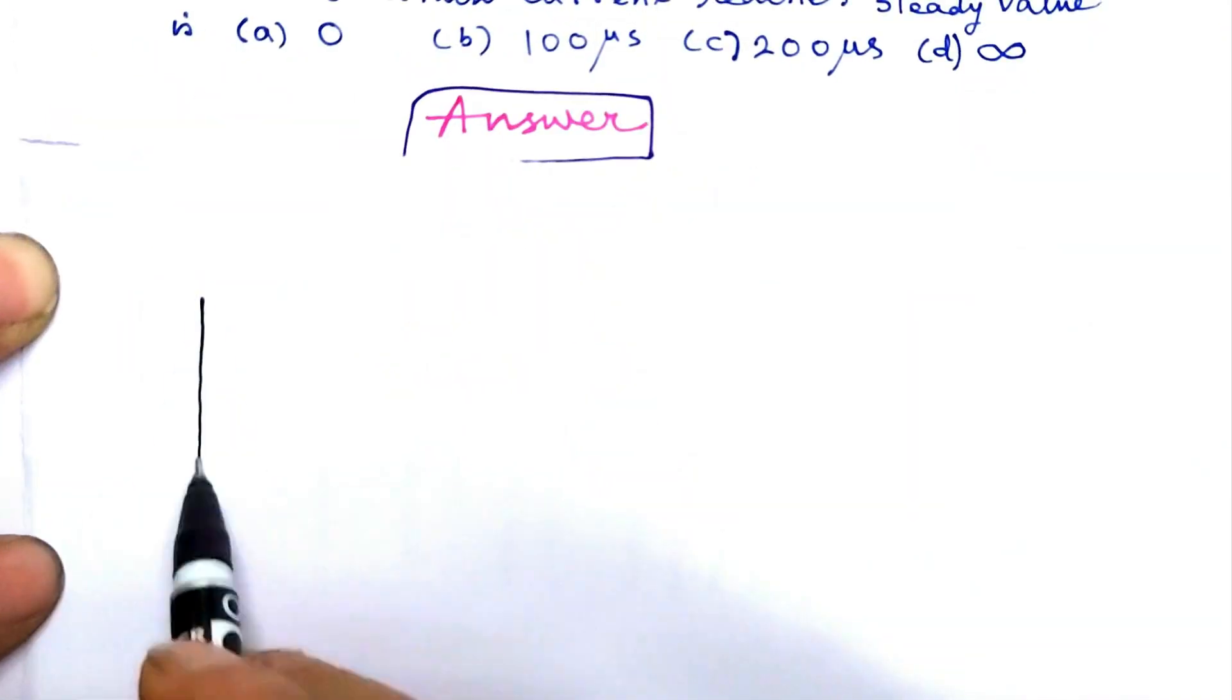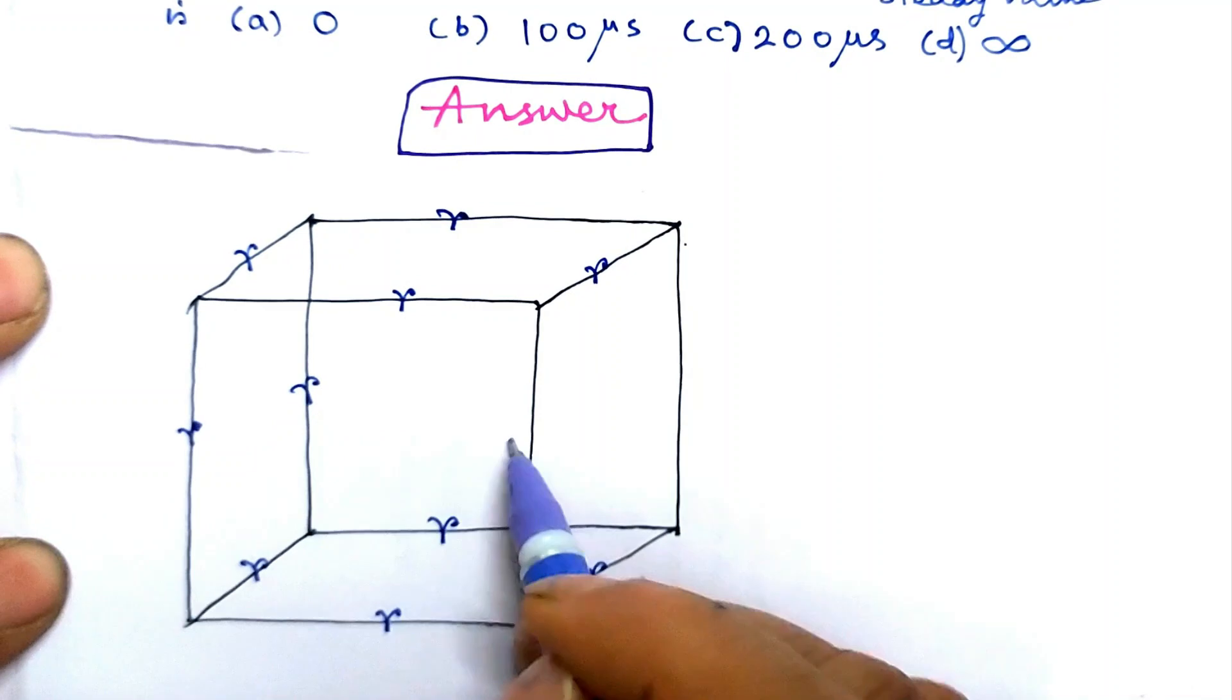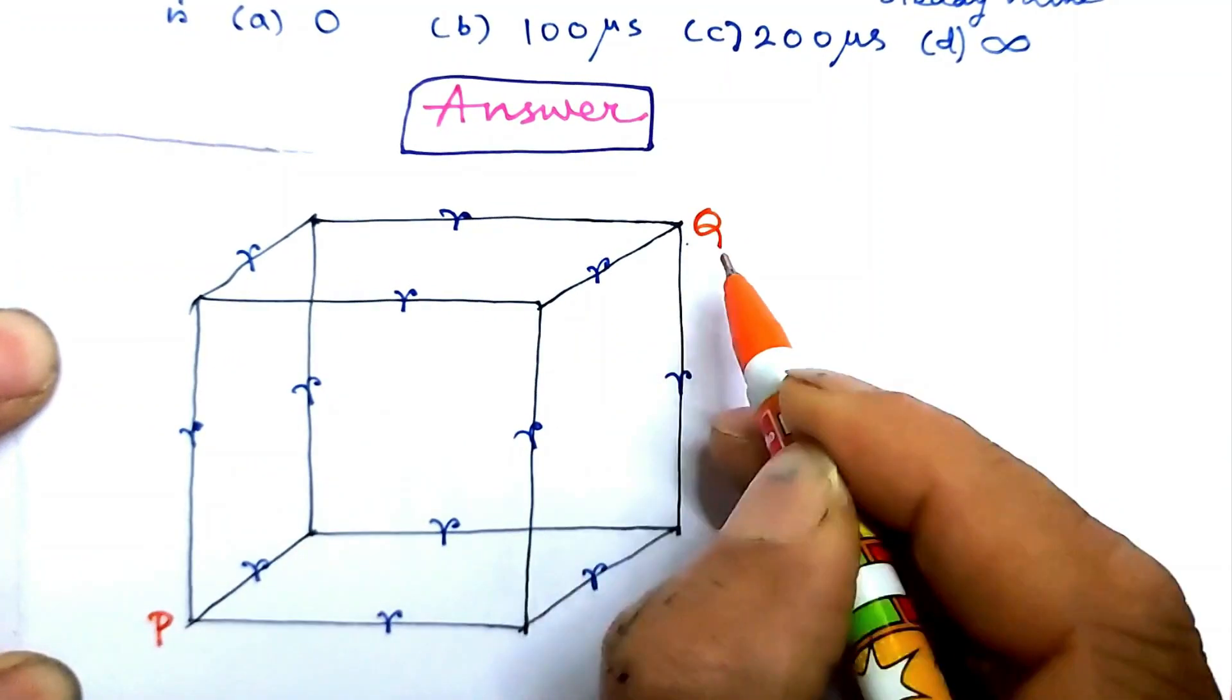Consider the cubic structure of resistors. For convenience of reference, let us give names to the junctions.